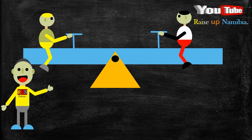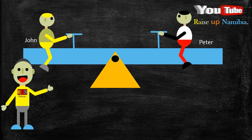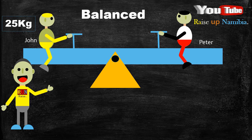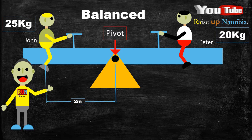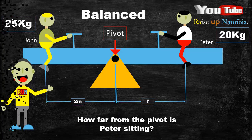Here we have John and Peter playing on a seesaw. The seesaw becomes balanced, given that John is 25 kilograms and is sitting two meters from the pivot, while Peter is 20 kg. How far from the pivot is Peter sitting?